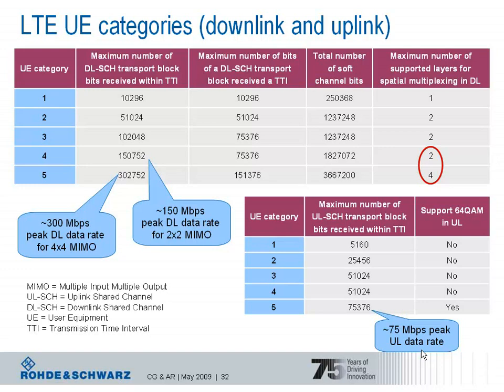The lower table shows the uplink UE categories. Again there are five, differing in the maximum number of uplink shared channel transport block bits receivable within a one millisecond transmission time interval. The highest category supports 75,000 bits, corresponding to a 75 Mbps peak uplink data rate. The reason is that 64QAM modulation is optional for terminals in the uplink — only category 5 supports 64QAM and can therefore achieve this high data rate.